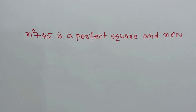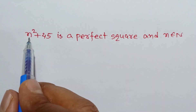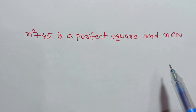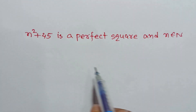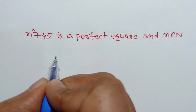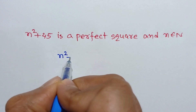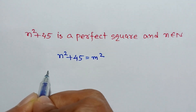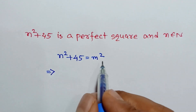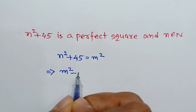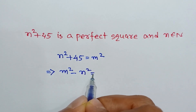Hi everyone. In this video I am going to show how to find the value of n for which n squared plus 45 is a perfect square, where n is a natural number. Suppose n squared plus 45 equals a perfect square, which is m squared. So we can write n squared plus 45 is equal to m squared, or taking n squared to the right side, we will have m squared minus n squared is equal to 45.